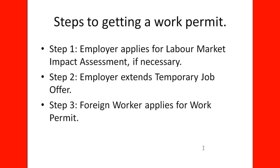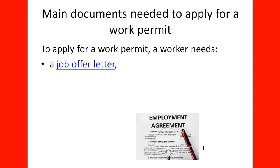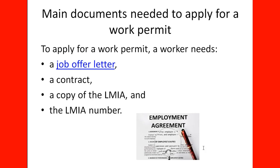The employer then provides the documents to the foreign worker to apply for the work permit. Step 4: the work permit is issued by the visa office serving the country of the applicant. The main documents needed to apply for the work permit include a job offer letter, a contract, a copy of the LMIA, and the LMIA number. The job offer letter is not the same as the contract — the contract contains more detail about the nature of the job, benefits, and conditions, while the job offer is more general. You need both the copy of the LMIA and the LMIA number to apply.